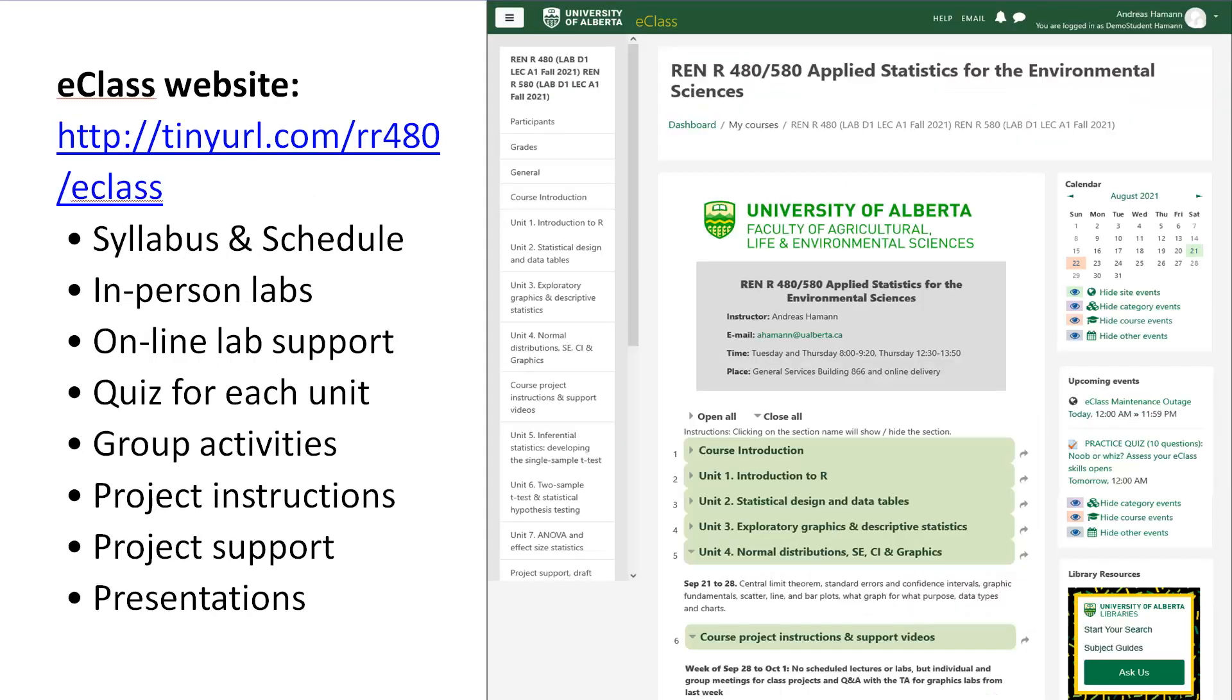If you take this class for credit, go to the eClass website. There you find your official syllabus and schedule, information about in-person labs. If you take this class online, there will be online lab support and synchronous zoom sessions. There's also a quiz for each of the 10 units, a number of group activities, and you also do a project or group project.